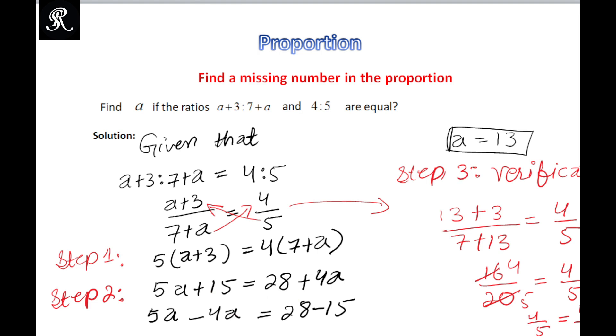Ab third step mein yeh hai ke aap ko verify karna hai ke jo answer aap ke paas aa gaya hai, woh hi right solution to this proportional problem. Hamein pata hai ke proportion mein 2 equal ratios ko compare kiya jata hai. Ab hum yeh substitute kar, a equal to 13 iss mein dekh lein ke dono side equal hain ya nahi. To hum ne substitute kiya and we end with 4 upon 5 and 4 upon 5.